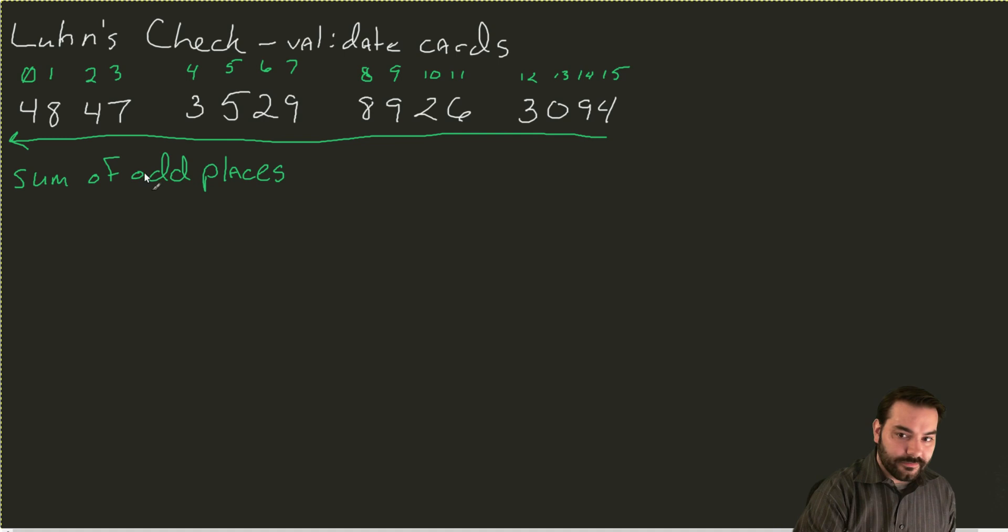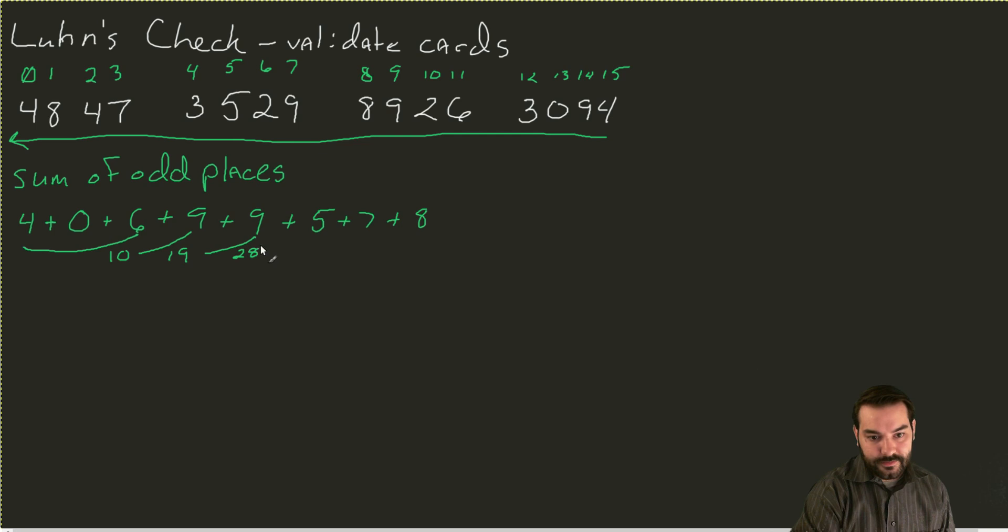So I'm going to start counting from my 15 slot. 4 plus 0 plus 6 plus 9 plus 9 plus 5 plus 7 plus 8. So I add these together. 4 and 0 is 4, but 4 and 6 is 10. 10 and 9 produces 19. 19 and 9 produces 28. Then 28, 33, 40, 48. So by adding all of these odd placed numbers, I get 48. Simple enough, nothing too terribly crazy going on there.